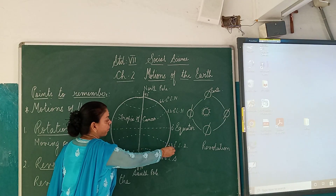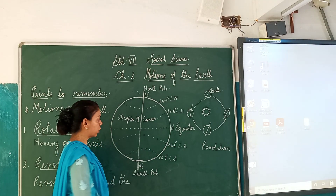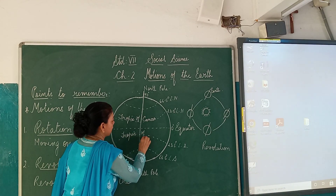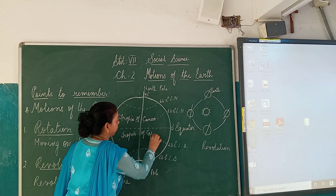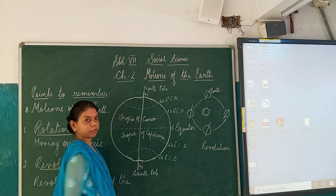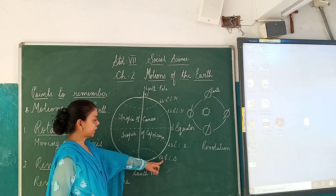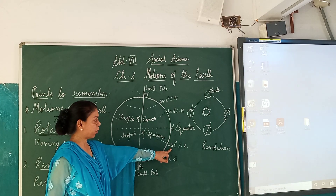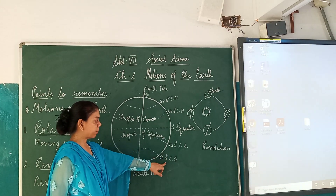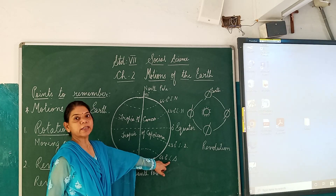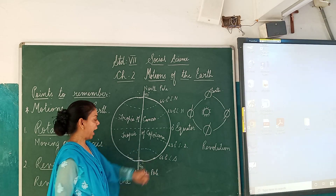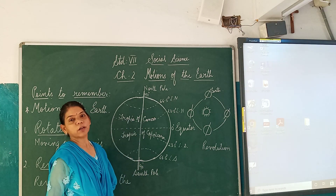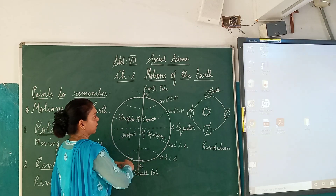At 23.5 degree latitude towards the south is the Tropic of Capricorn. We have learned these things in our earlier geography chapters. From 23.5 degree south and north up to 66.5 degree north and south latitude. And from 66.5 degree north to 90 degree is the south pole and the north pole.